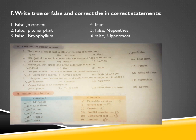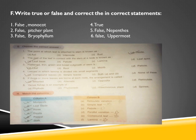Next true/false: 'The lowermost leaves are small, young and bright green.' This is FALSE — it is the uppermost leaves that are small, young and bright green. Choose the correct answer: The point at which the leaf is attached to the stem is known as the node. The part of the leaf in contact with the stem at the node is the leaf base. A flattened, thin, green and broad outgrowth of the stem is known as the leaf. Leaves in which the lamina is divided into small segments form a compound leaf. If three or more leaves are born at each node, the arrangement is called whorled phyllotaxy. Venus flytrap is an example of an insectivorous plant.